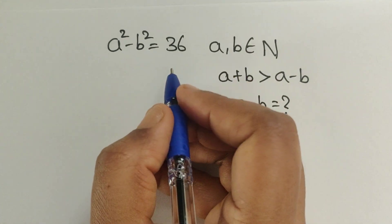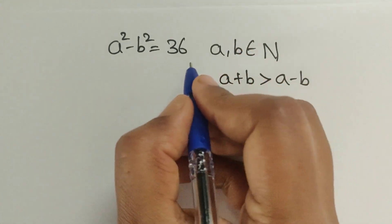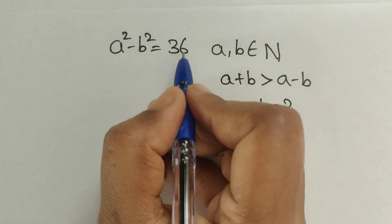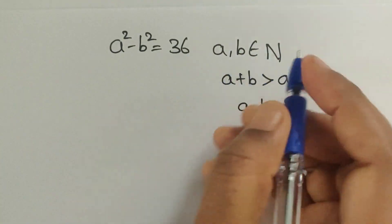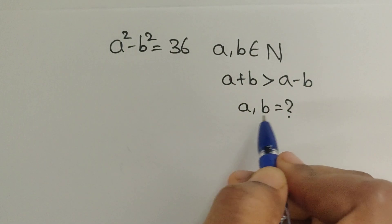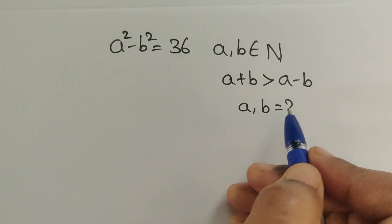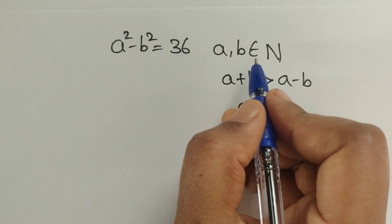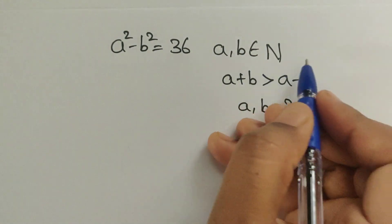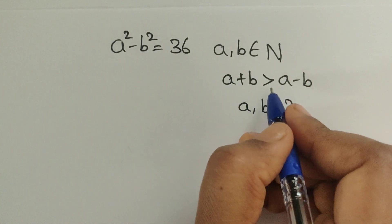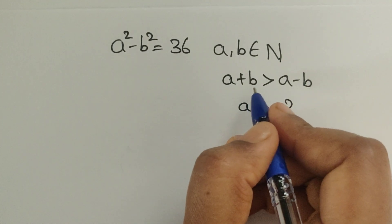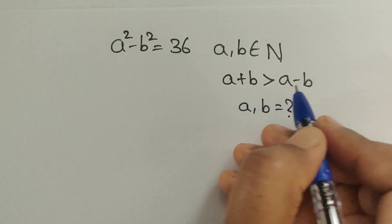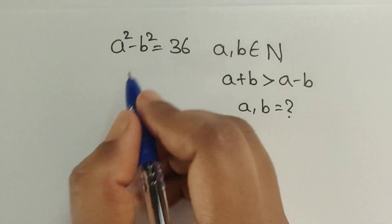Hello everyone, welcome back to our channel. Here we have one problem: a squared minus b squared equals 36. In this problem we have to find the values of a and b, where both are natural numbers. We are given one condition: a plus b is greater than a minus b.